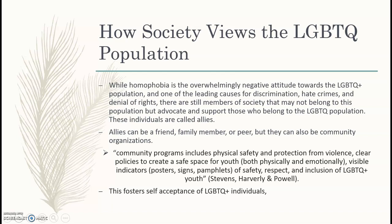Community programs include physical safety and protection from violence, clear policies to make a safe place for youth both physically and emotionally, visible indicators like posters, signs, or pamphlets of safety, and respect and inclusion of LGBTQ plus youth. These programs also include the opportunity to work with staff members who share the identity of the individual, fostering self-acceptance. Research shows that promoting self-affirming forms through community-based programs leads to increased positive health outcomes.